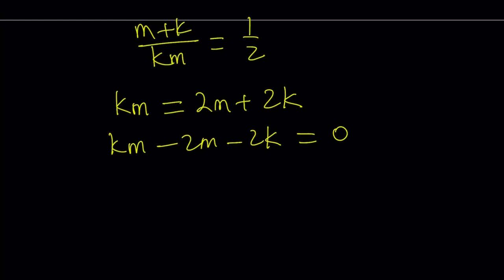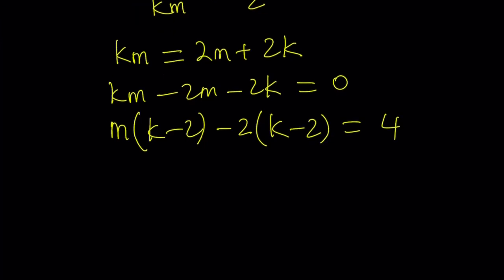Here's what I'm going to do. I'm going to factor an m here. That's going to give me k minus 2. I'm hoping to get another k minus 2, but if I take out a negative 2, I only get k. So I need minus 2, but negative 2 times negative 2 is positive 4, which means I have to add 4 to both sides. So k minus 2 is a common factor. Simon says group and factor.